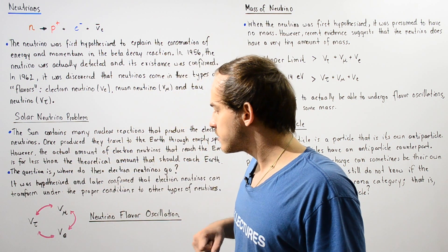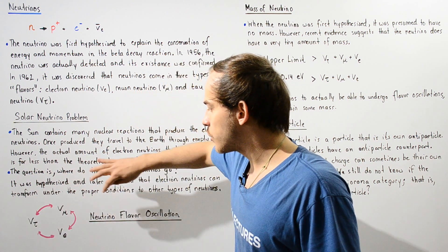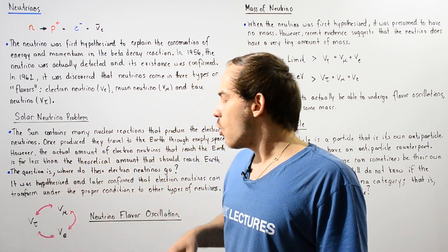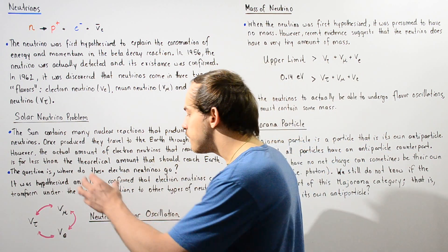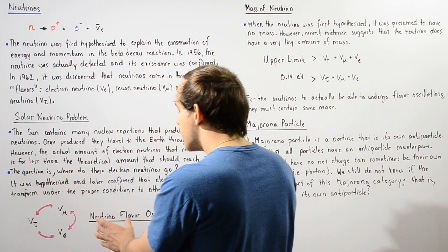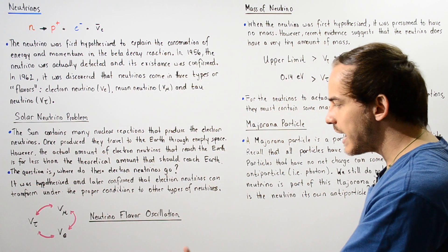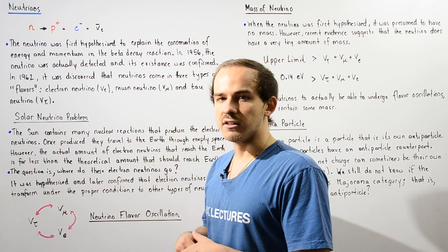The muon neutrino can transform into either one of these, and the tau neutrino can also transform into either the muon or the electron neutrino. And this ability for the neutrinos to basically oscillate back and forth between the different types of flavors is known as the neutrino flavor oscillation.